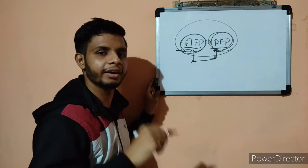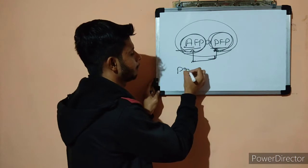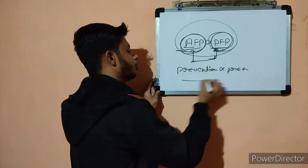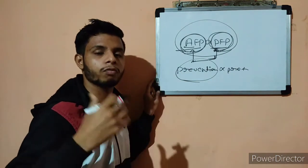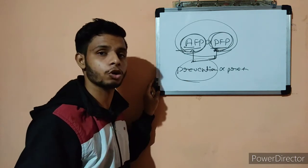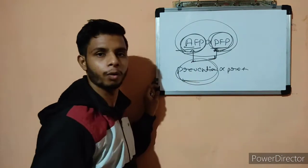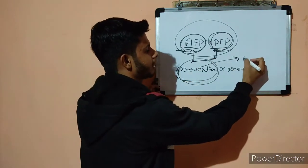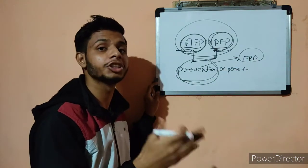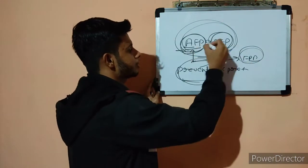We need to understand the difference between prevention and protection. Prevention means any sort of control measures or practices that will stop the initiation — the starting — of the fire. These are called Fire Prevention Practices, or FPP. If we follow FPP, fire will not start.